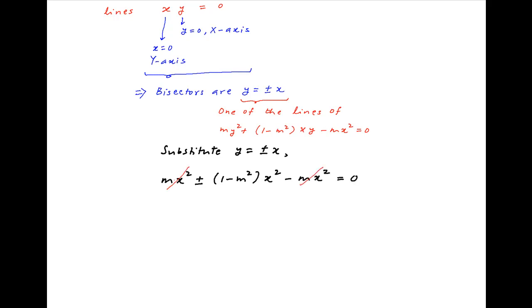mx² cancels on the left-hand side. Now if this is to be true for all values of x, then 1 - m² should be equal to 0, and therefore m = ±1, which is the required answer.